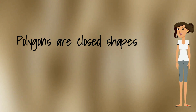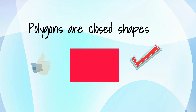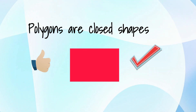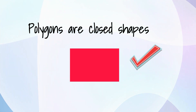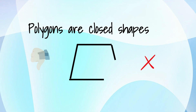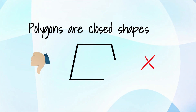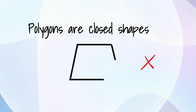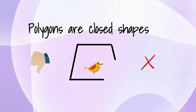Another important thing to consider is that polygons are closed shapes. For example, this one could be a polygon because it's a closed shape. But this one cannot be called a polygon because it's not closed and there's a way to the outside area of the shape.